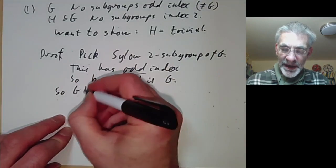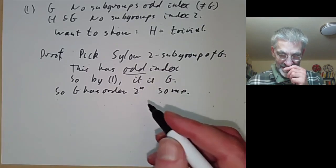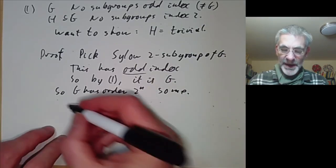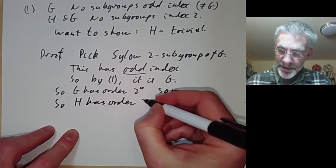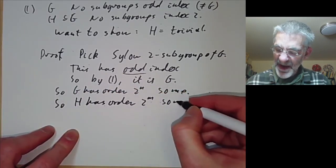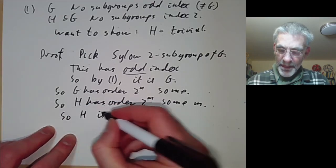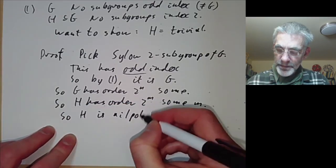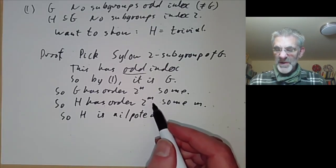So G has order 2 to the n for some n because any Sylow 2 subgroup has order 2 to the n. So H has order 2 to the n for some n. So H is nilpotent because any group of prime power order is nilpotent.